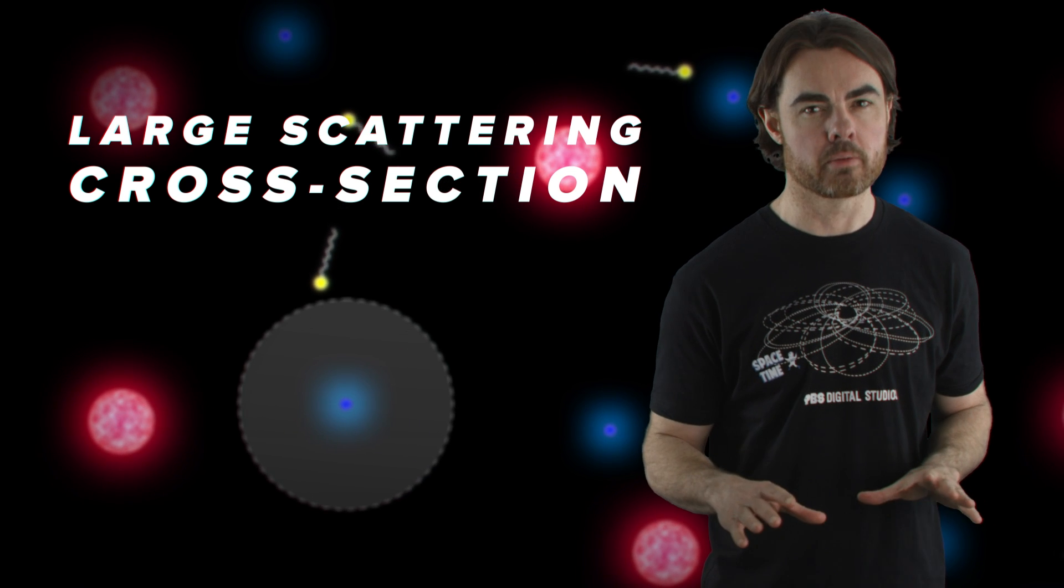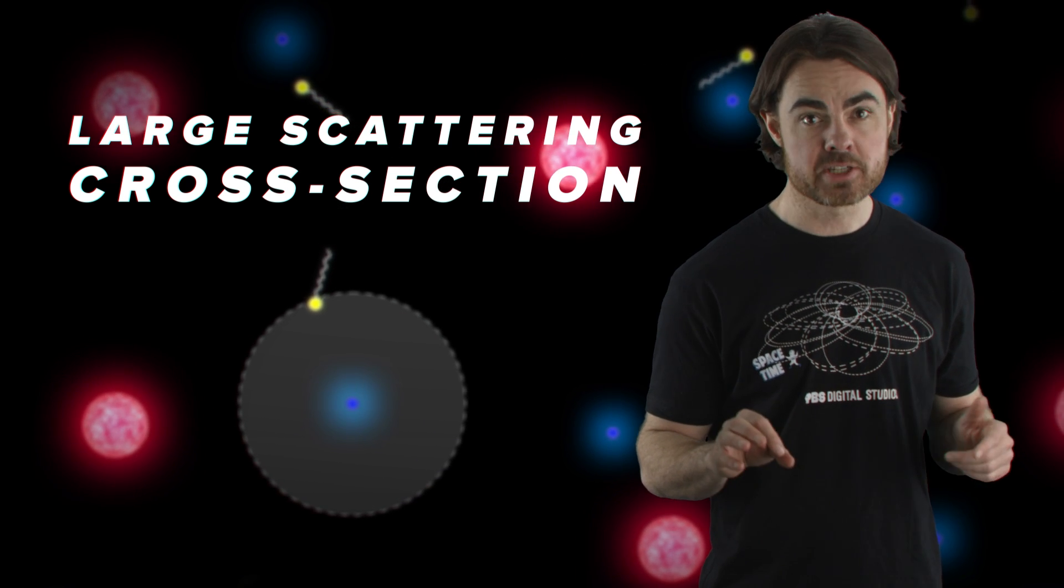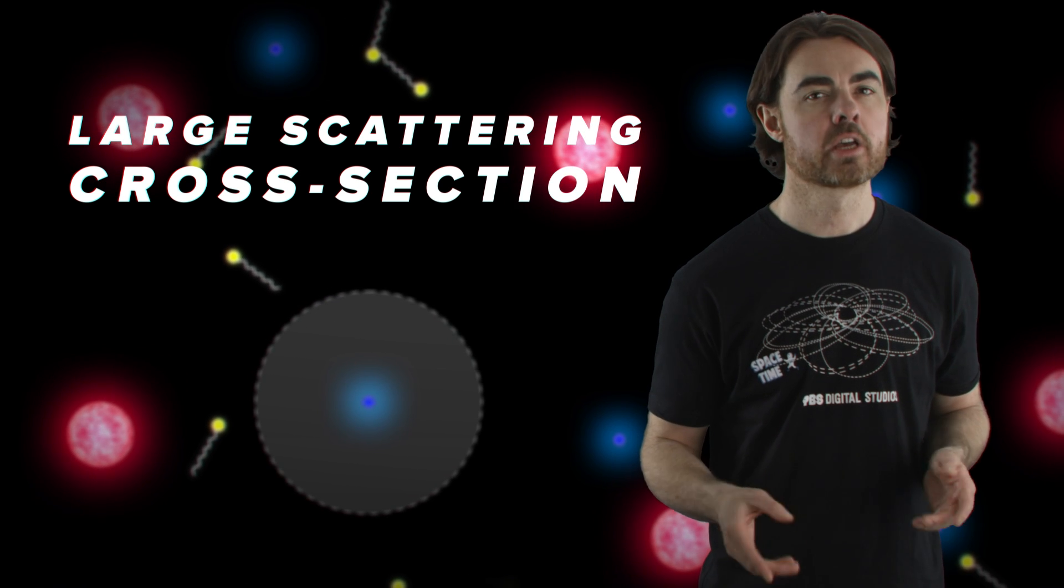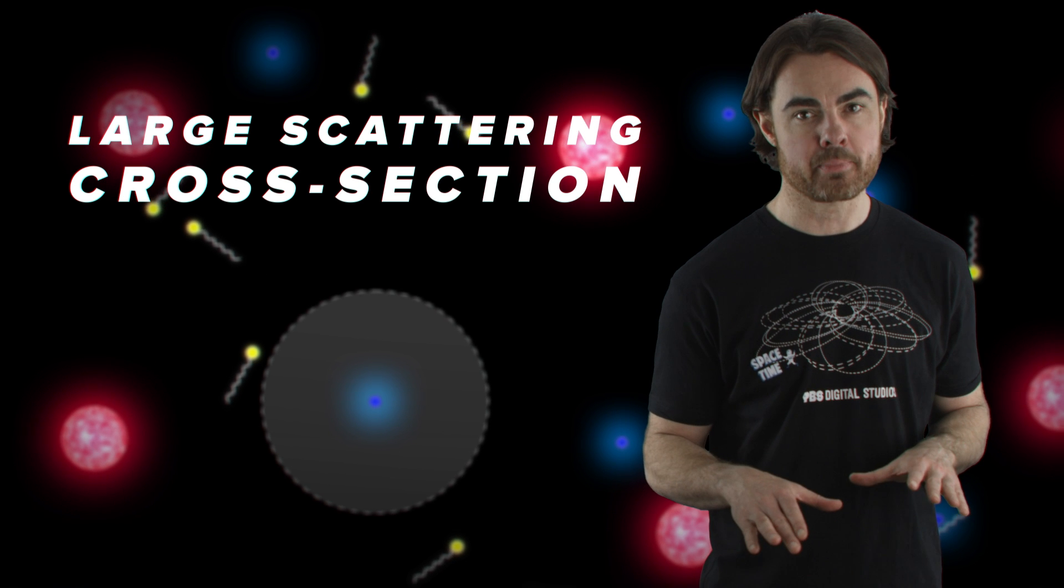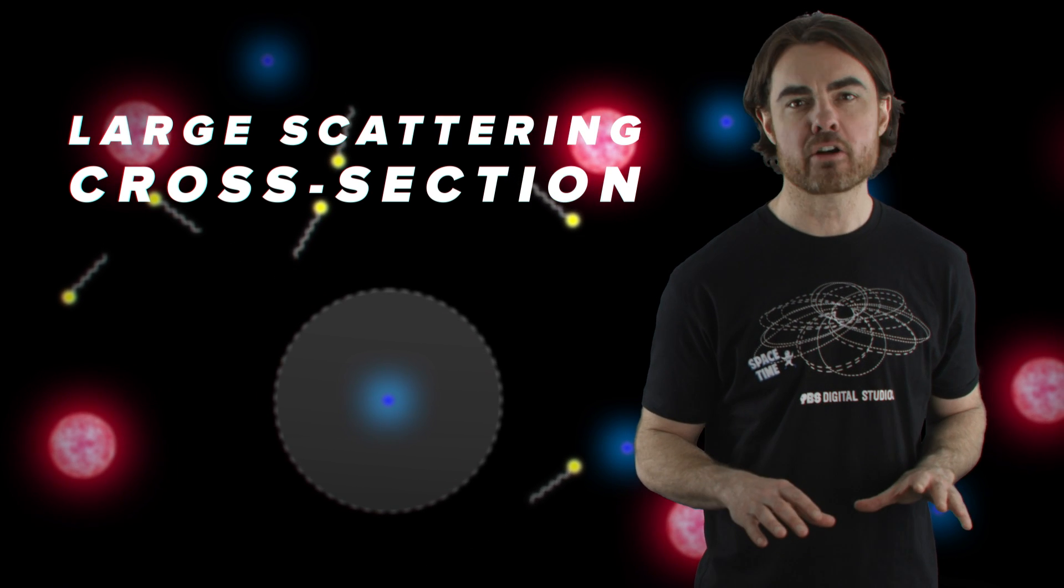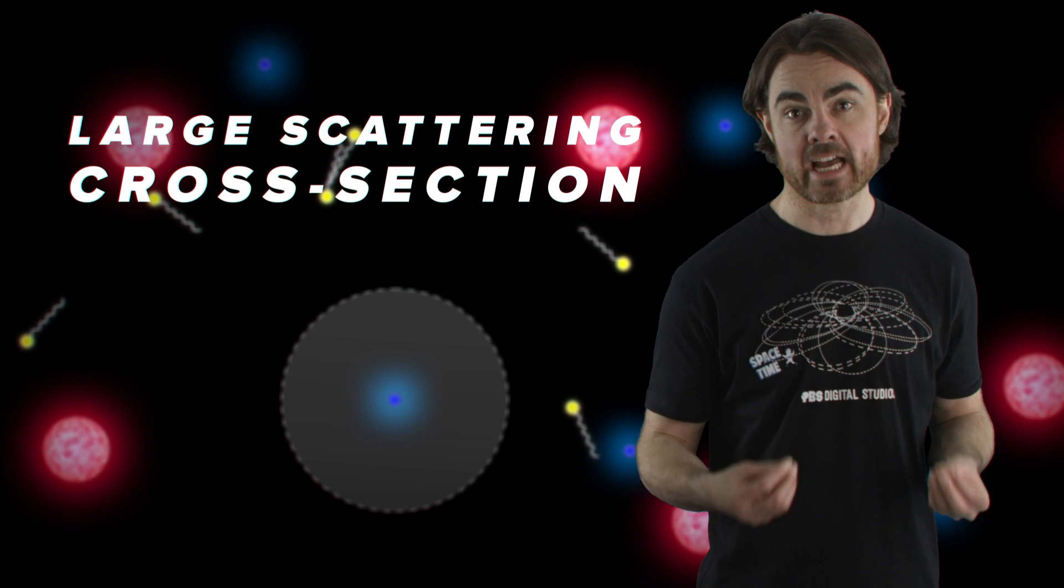We can simplistically think of this interaction region as a solid circle. Photons passing inside the circle interact and are scattered. Those passing outside do not. This isn't exactly what's really happening, but the approximation does allow us to estimate how far a photon can travel before encountering an electron.